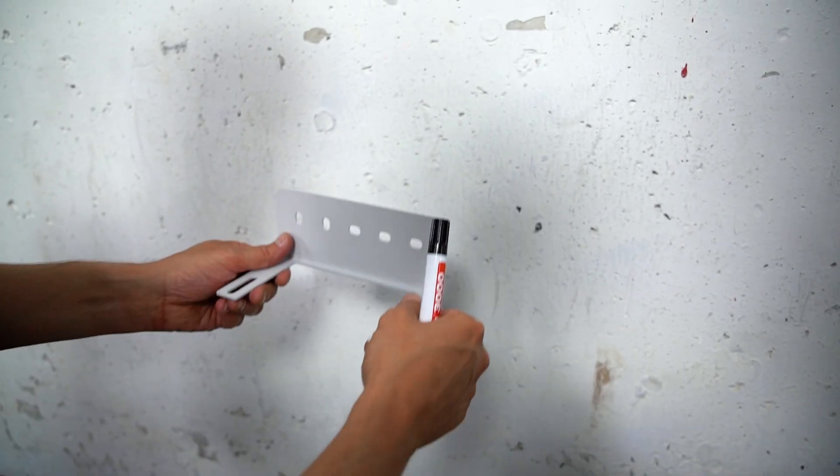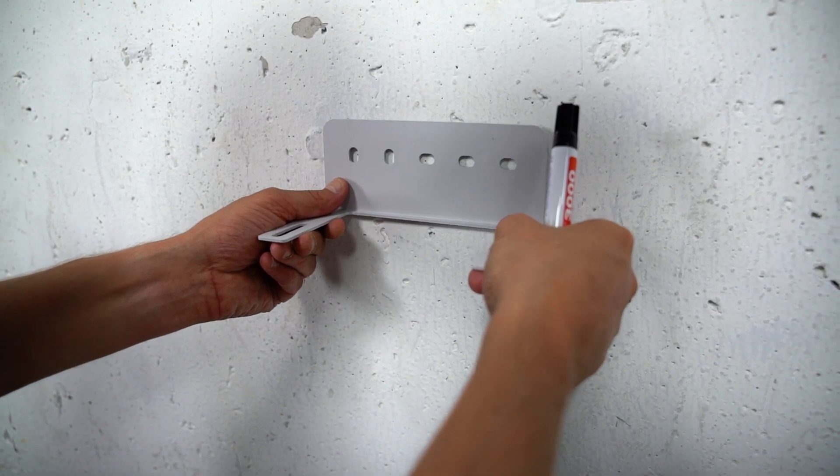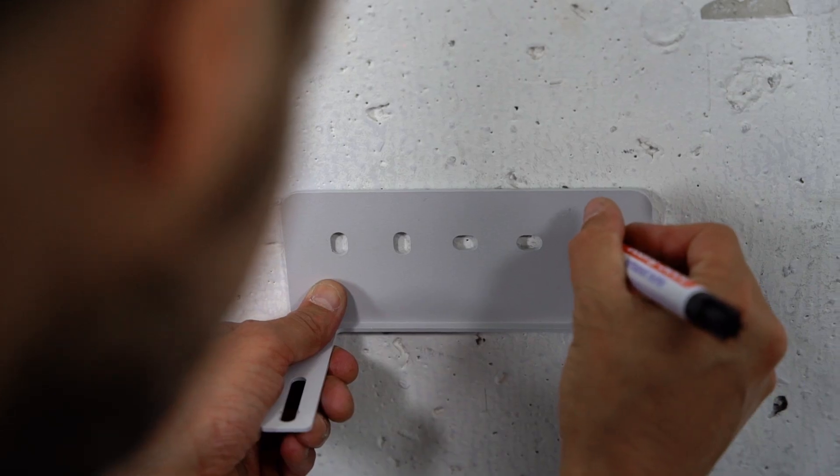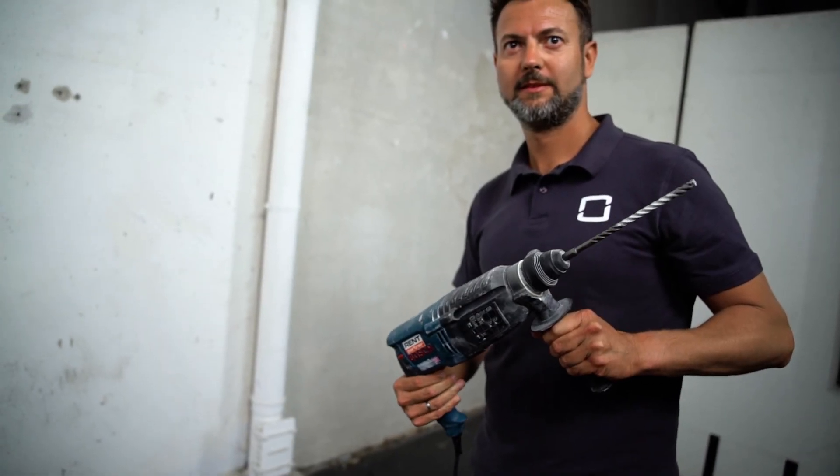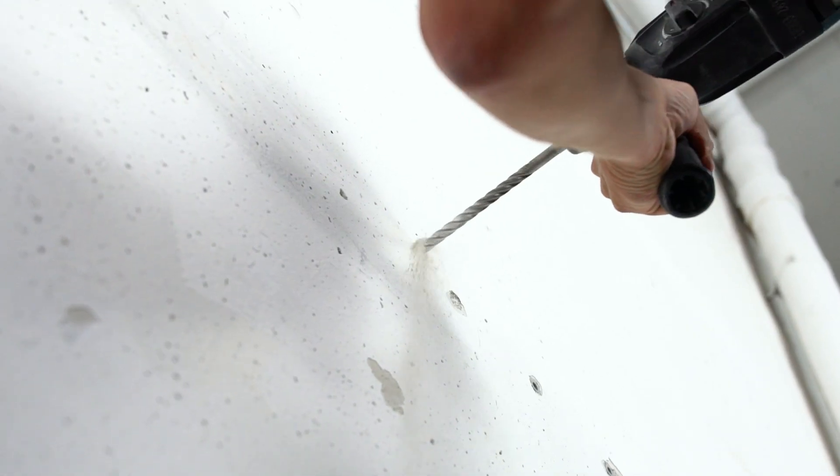The bracket will be mounted on the top battery module. After defining the right position, you need to mark the position of both outermost holes for drilling. Take your drill with the 10 mm drill bit and drill at least 70 mm deep into the wall at the marked points.